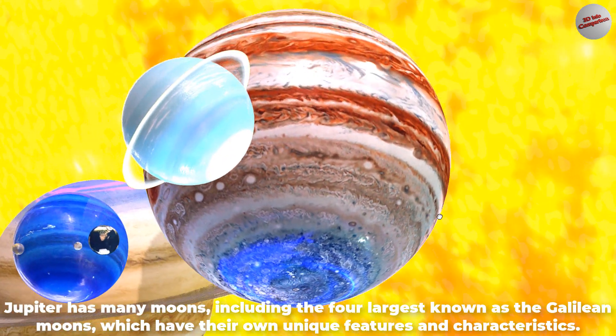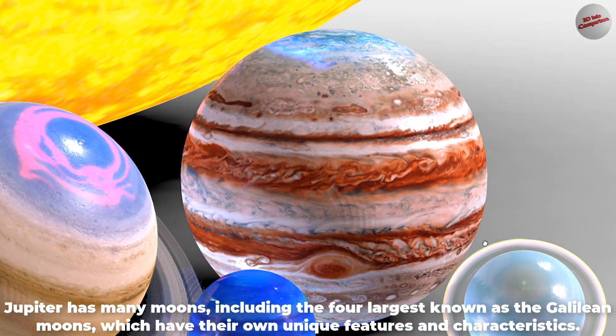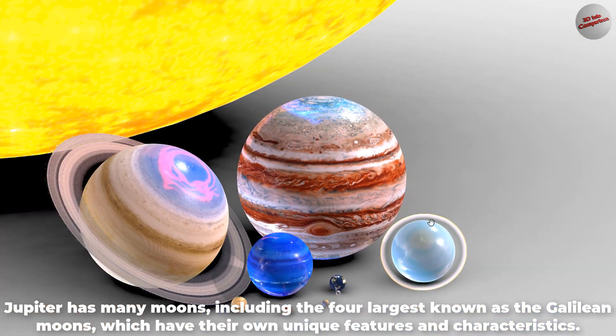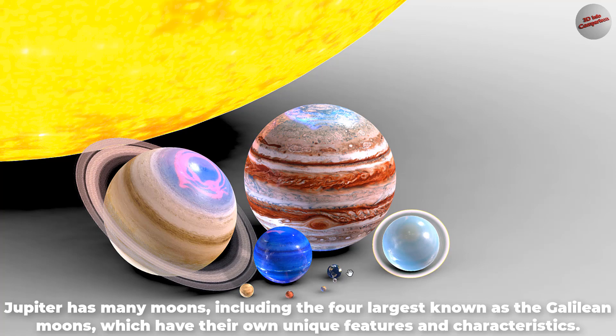Jupiter has many moons, including the four largest known as the Galilean moons, which have their own unique features and characteristics.